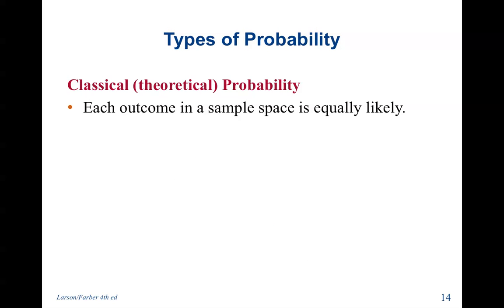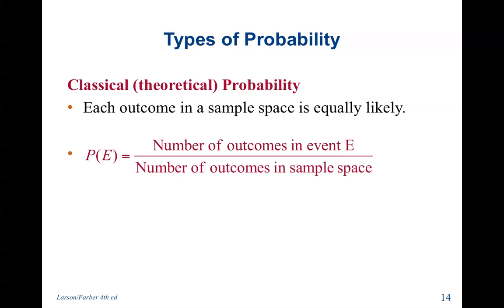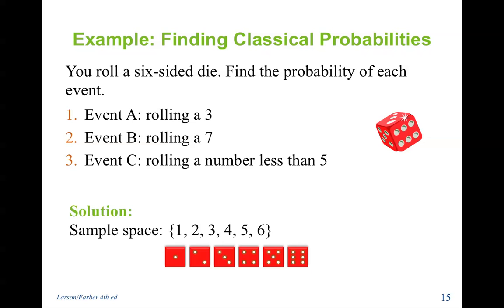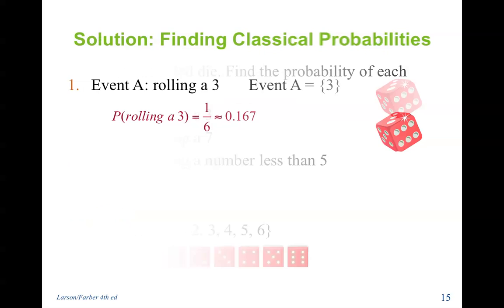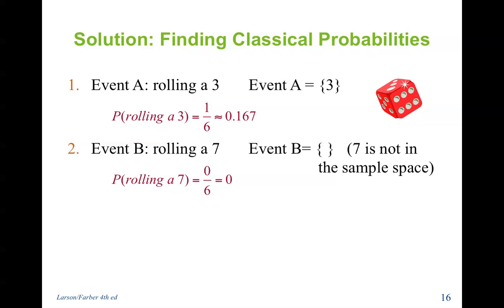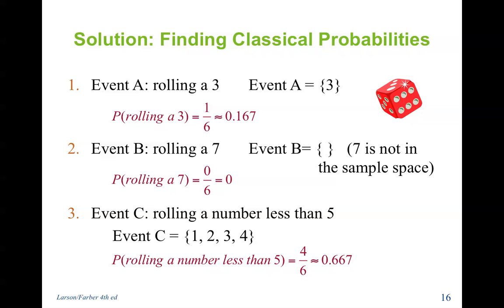Classical theoretical probability. Each outcome in a sample space is equally likely. So that equals the probability of the number of outcomes in event E divided by the number of outcomes in the sample space. For example, you roll a six-sided die. Find the probability of each event. Rolling a three, rolling a seven, rolling a number less than five. Your sample space is one through six. Event one, rolling a three, that's one out of six. We don't have any more likelihood of getting a three than any other number because the dice should be weighted equally. Event B, rolling a seven, that's not possible. Seven is not in our sample space. And what about rolling less than five? One, two, three, or four. That is four choices less than five. So four out of six.